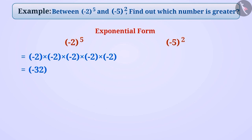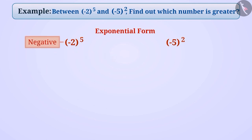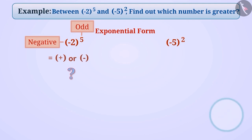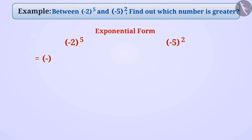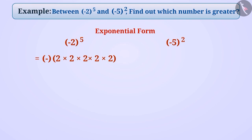You can solve the same using another method. Here we see that the base is a negative number and the exponent is an odd number. So, in a situation like this, will the result be positive or negative? Think for a while. The result will be negative. We will multiply 2 five times to get the result. By doing this, we get minus 2 raised to the power of 5 is equal to minus 32.